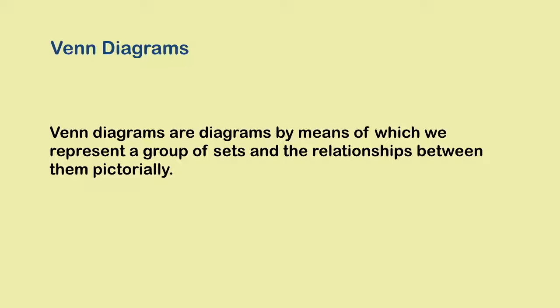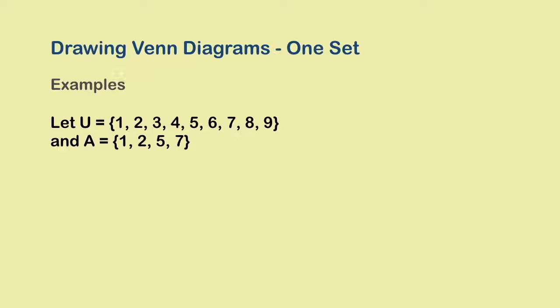Let's look at a few Venn diagrams to see what they are, what they look like, and how they work. Say we have a universal set whose elements are natural numbers from 1 to 9, and we have another set which has elements 1, 2, 5 and 7. So, how do we represent this information using Venn diagrams?